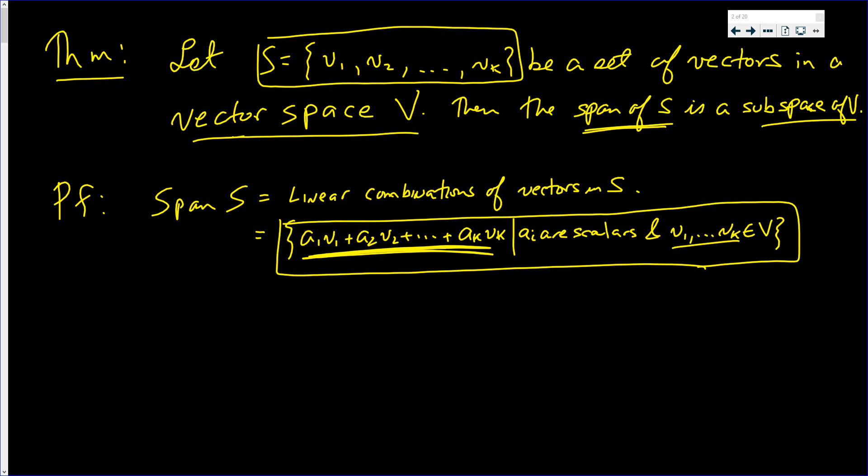Now, for this set to be a subspace of V, it has to be closed under addition. So I take two vectors of this form and I add them. I have a1·v1 plus a2·v2 all the way down to ak·vk, and I add another vector of that form: a1'·v1 plus a different scalar a2' times v2, all the way down to ak'·vk.